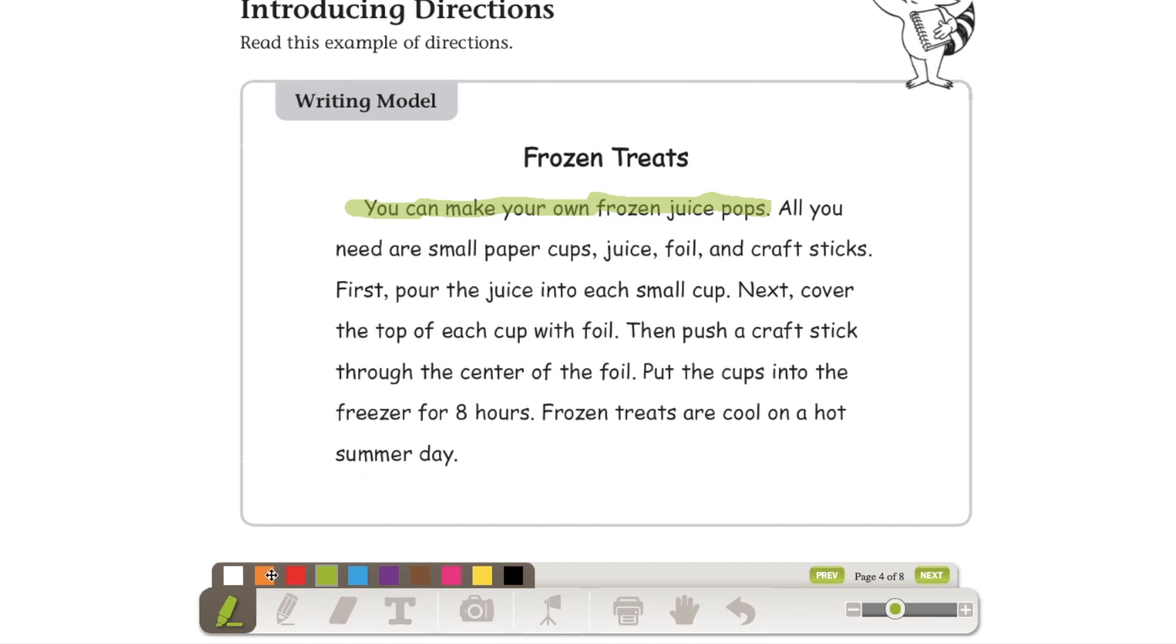Then you're going to start adding your details. What do you need first if you need to make something? Your materials. All you need are small paper cups, juice, foil, and craft sticks. So make sure you list everything that you need in your materials. And in the list you have to put commas in between each item to make sure we know that they are separated.